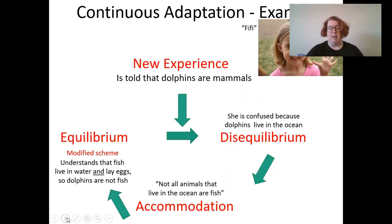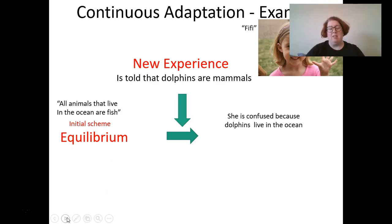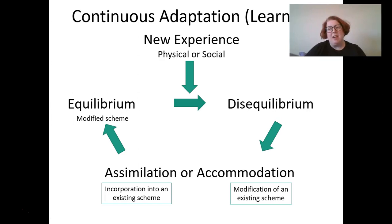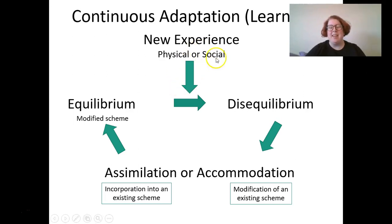That explains the idea of continuous adaptation — you have a new experience and go from equilibrium to disequilibrium. Here's another example: a baby might have the idea that all four-legged animals are dogs, because they have a dog at home. Then they go to the neighbor's house and see a new four-legged animal — that's a state of disequilibrium because it's a new animal they haven't seen before.